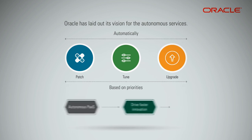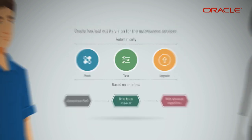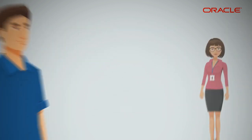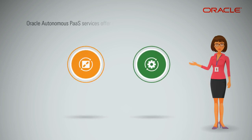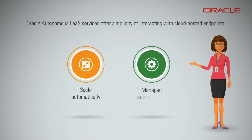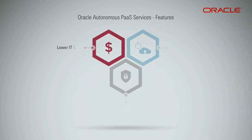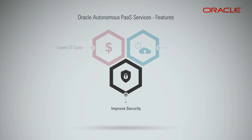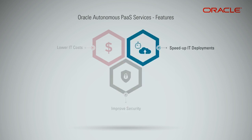Autonomous PaaS services drive faster innovation with advanced capabilities. Oracle Autonomous PaaS services offer simplicity of interacting with cloud-hosted endpoints that scale automatically and are managed automatically — you don't have to care about the underlying services behind the PaaS endpoints that you interact with. Autonomous PaaS services lower IT costs and improve security because they require less human management and eliminate human error. These services also promise to speed up IT deployments by letting developers jump right to creating new functionality, rather than having to spend time on the routine tasks of provisioning, optimizing, tuning, integrating, and securing systems.